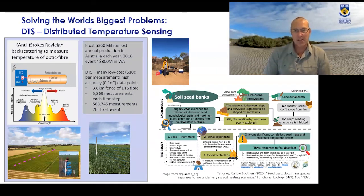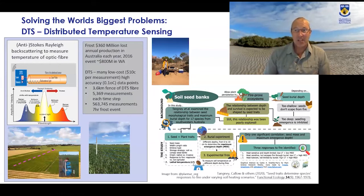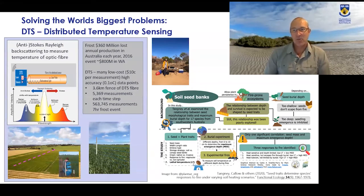We also worked with fire ecologists, using optic fiber cable through soil to understand how different litter loads affect soil temperature and plant species survival — how weed species are affected by fire regimes, and how we control burning in landscapes. This addresses the big issues of bushfires that we've seen across Australia, North America, South America, and Europe, and helps us understand these processes using spatial and temporal sensing data.